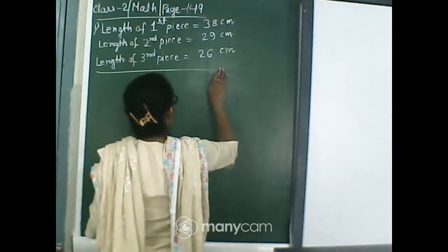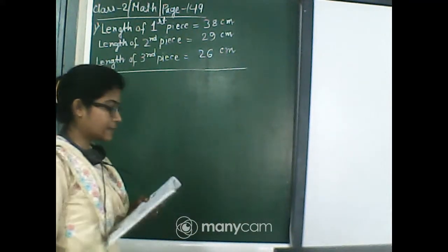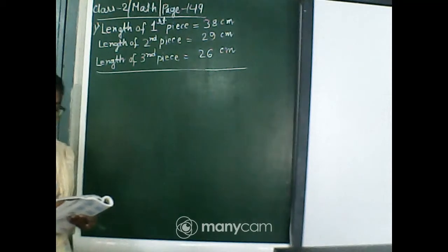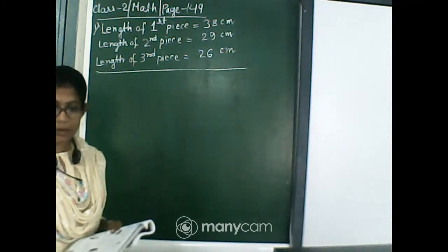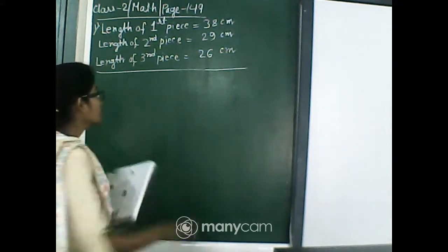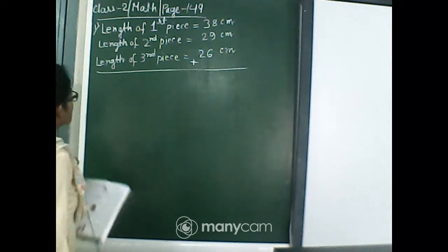Now, as we can see it tells us what length of the ribbon did she buy altogether, means we have to do here addition, isn't it? So we will give here the plus sign, ok.